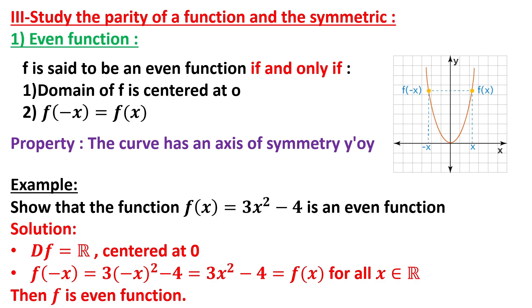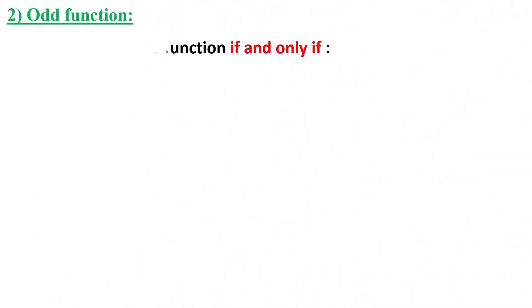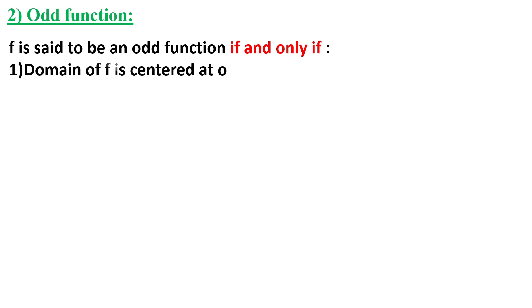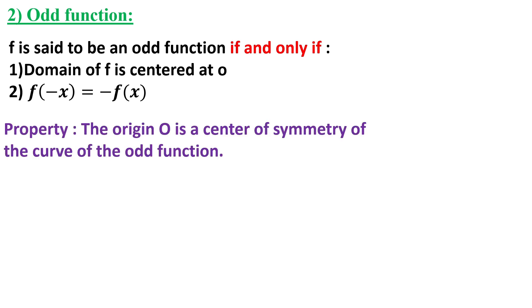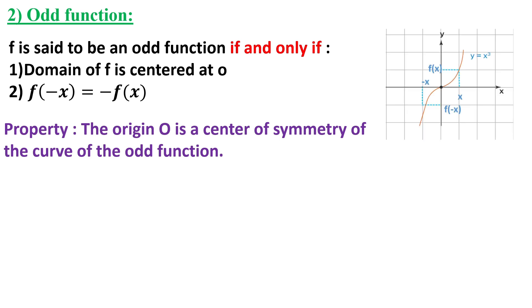Odd functions: a function f is said to be odd if and only if the domain of f is centered at zero, and the function satisfies f(−x) = −f(x) for all x in the domain. This property implies that the graph of f has the origin O as a center of symmetry. As shown in the figure, x and −x have opposite images, indicating that the origin acts as a point of symmetry for odd functions.